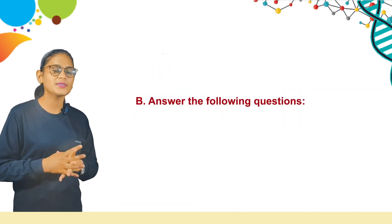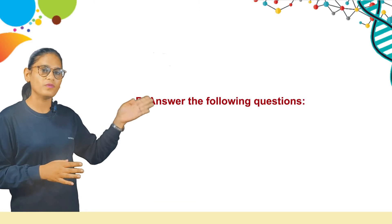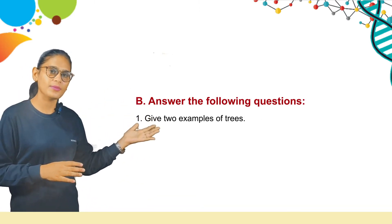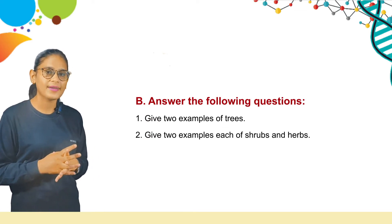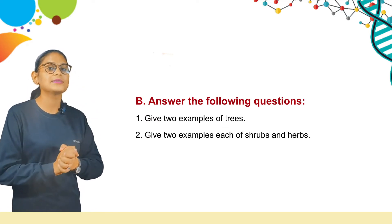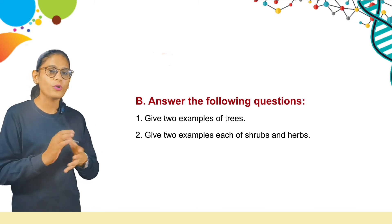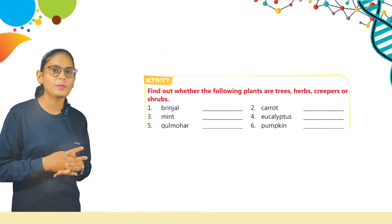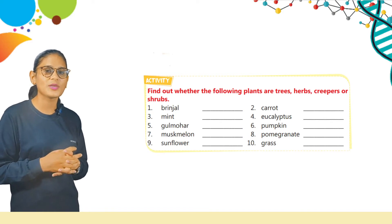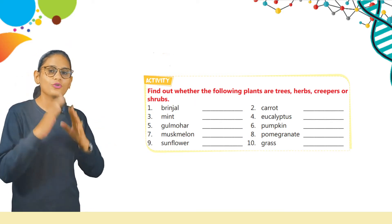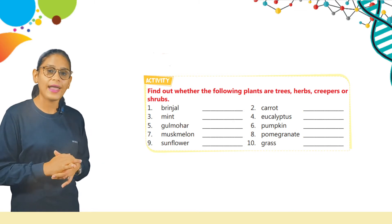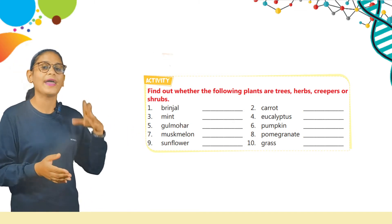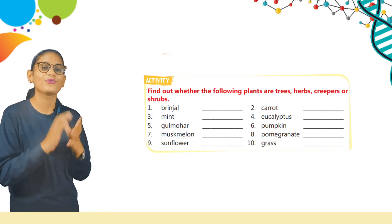Now Part B: answer the following questions. Question one — give two examples of trees. You can write mango and neem. Question two — give two examples each of shrubs and herbs. You can write these answers by yourself from your book. Here is an activity: find out whether the following plants are trees, herbs, creepers, or shrubs. Read these names and differentiate which one is a tree, which one is an herb, and which one is a shrub.